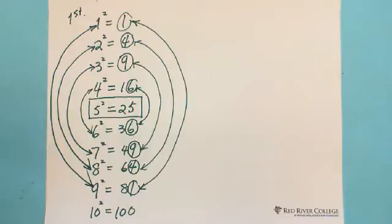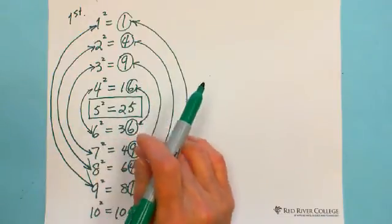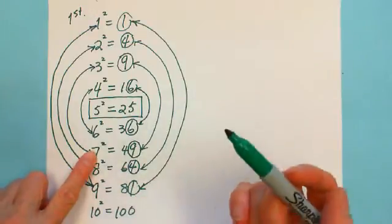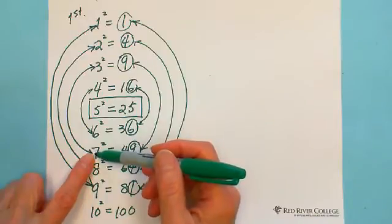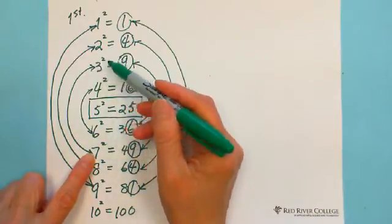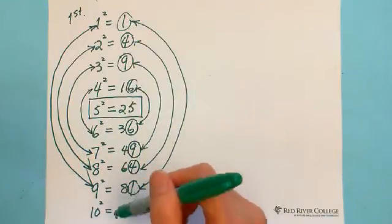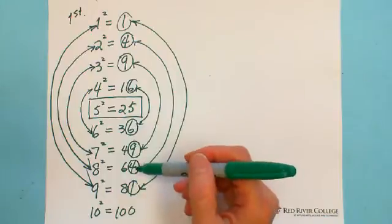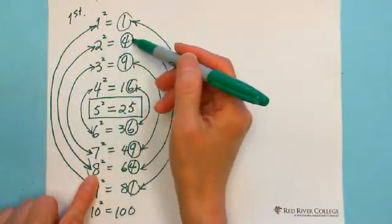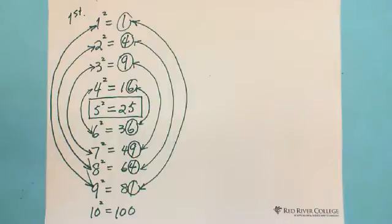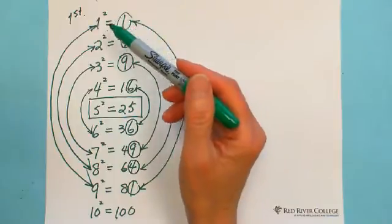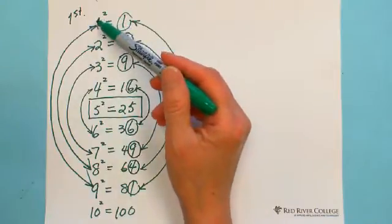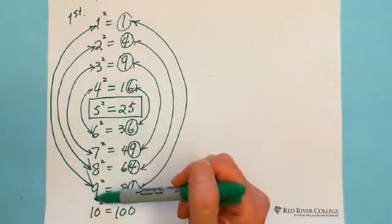So, it's easy. For example, 7 squared is 49. Which number, when squared, also has last digit 9? Since 7 makes 10 with 3, the answer is 3. Another example: 8 squared is 64, last digit is 4. Which number squared also ends in 4? 8 plus 2 equals 10, so the answer is 2. And 1 squared equals 1 — which number squared also ends in 1? It's 9, because 1 plus 9 equals 10. If you know one, you can get the other.